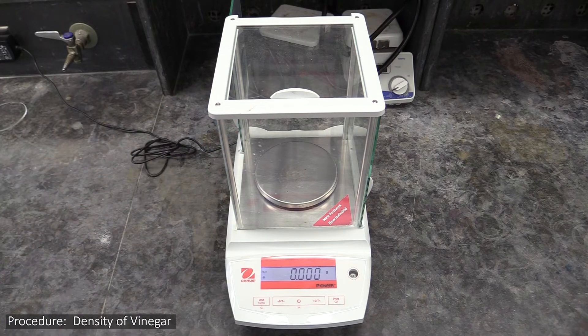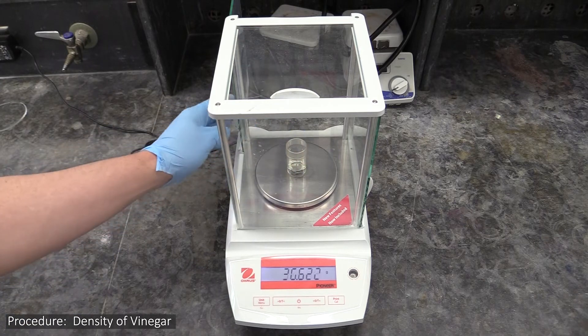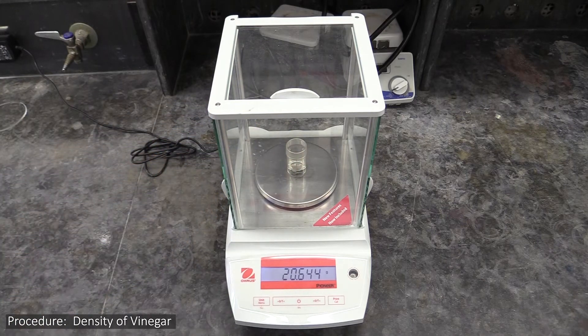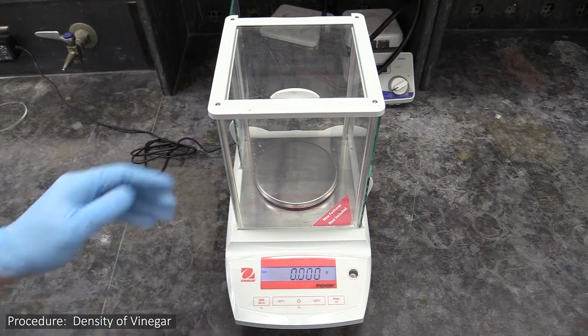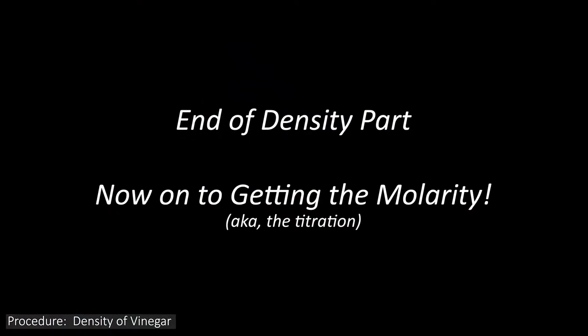After you've pipetted the vinegar into the bottle, re-weigh it with the vinegar inside. In your calculations, you can get the vinegar's mass by subtracting the mass of the empty bottle from the mass of the bottle with the vinegar. And that's all you need to do to get the data for calculating the vinegar's density.